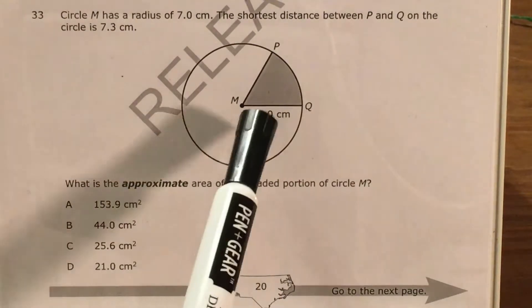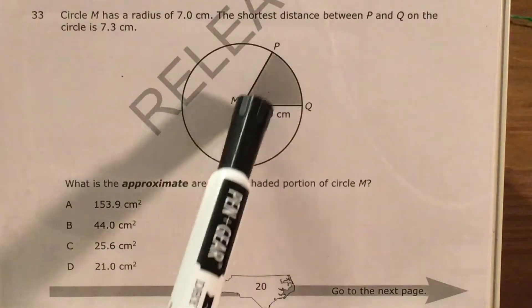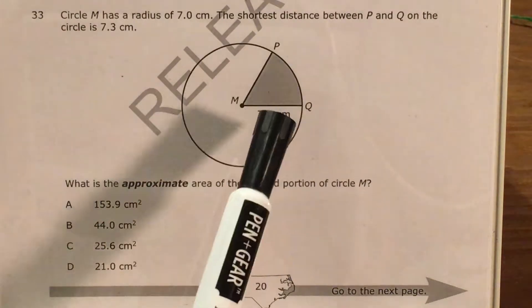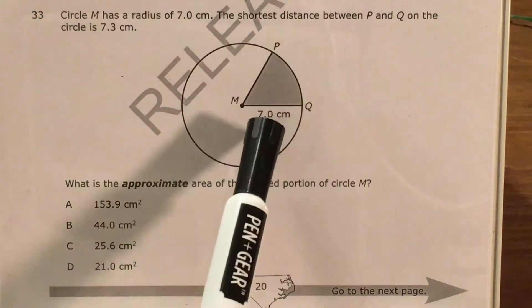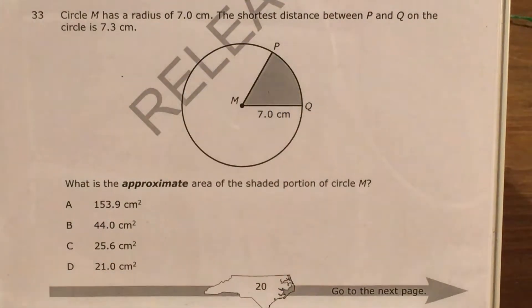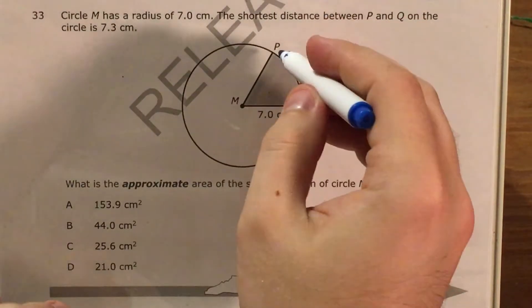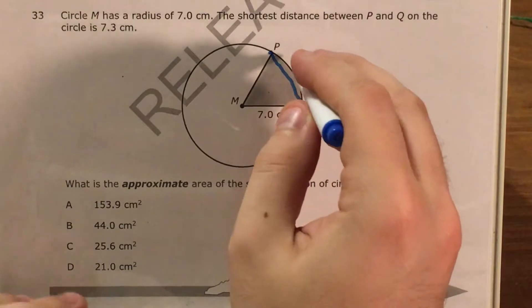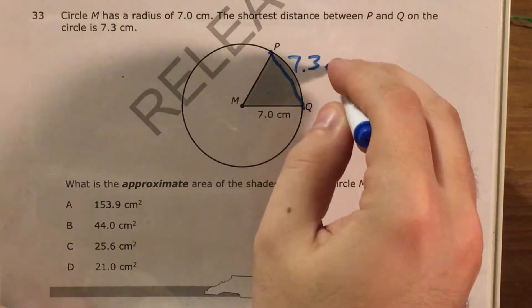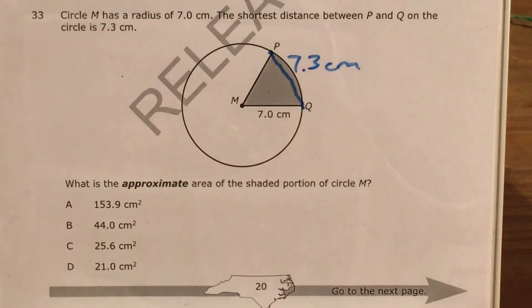The question tells us that circle M - so we name a circle by naming its center - has a radius of 7.0 centimeters, so exactly 7 centimeters, and the shortest distance between P and Q on the circle, this distance right here that kind of carves out a pie crust, is 7.3 centimeters.